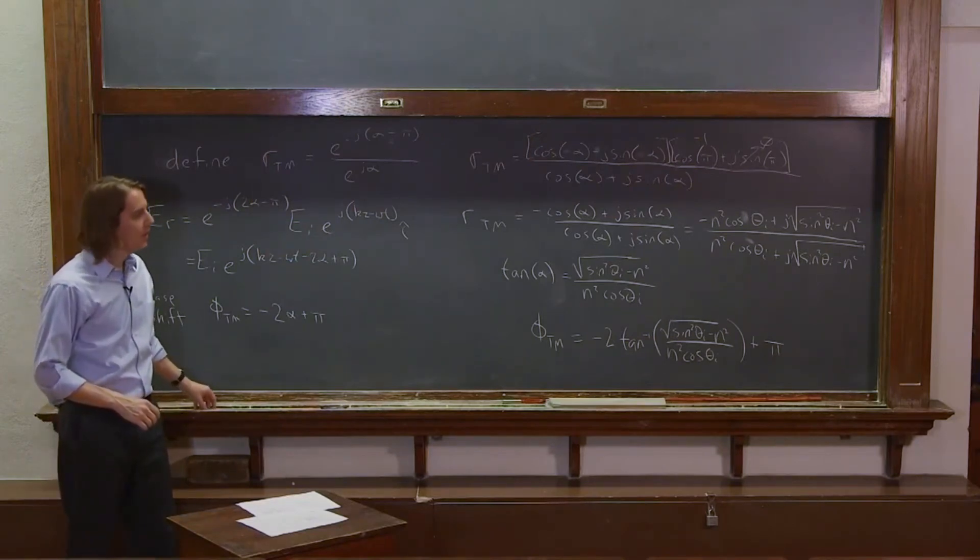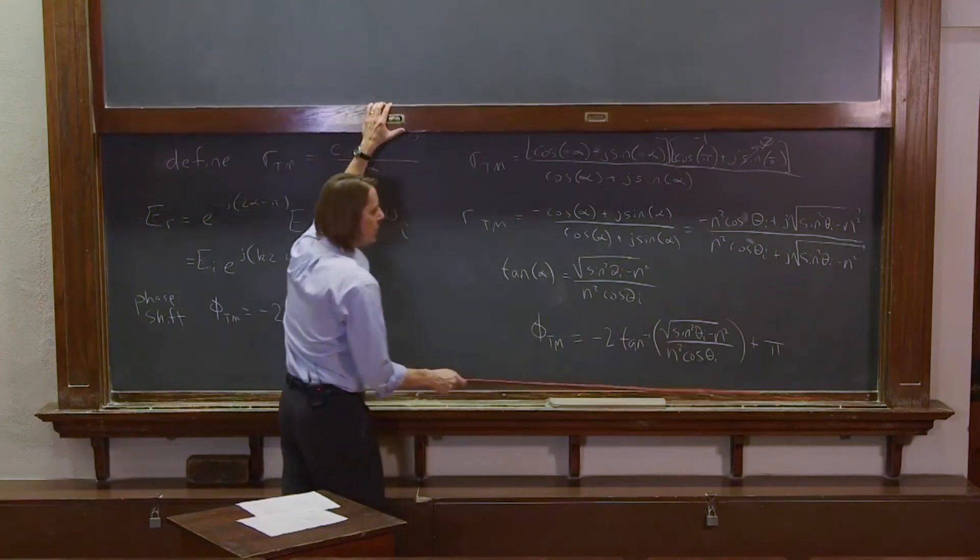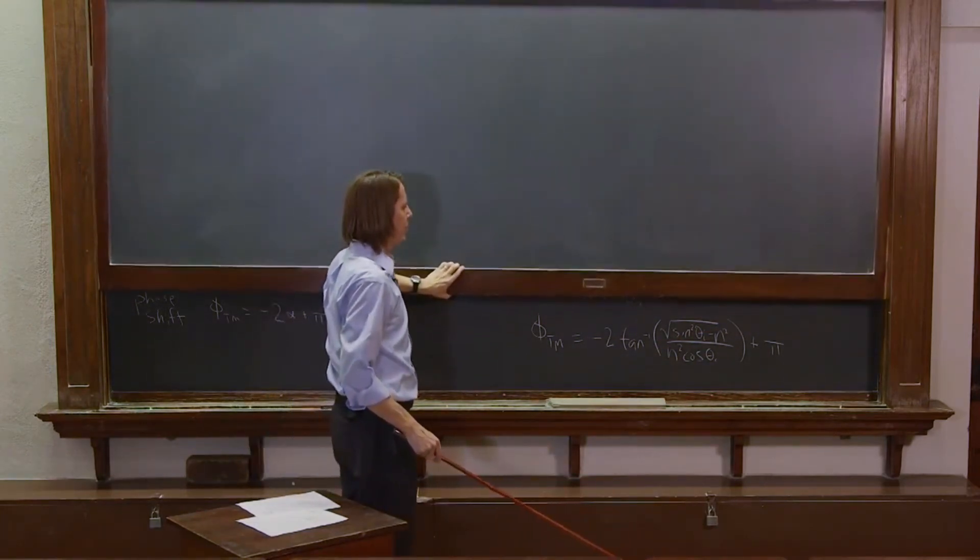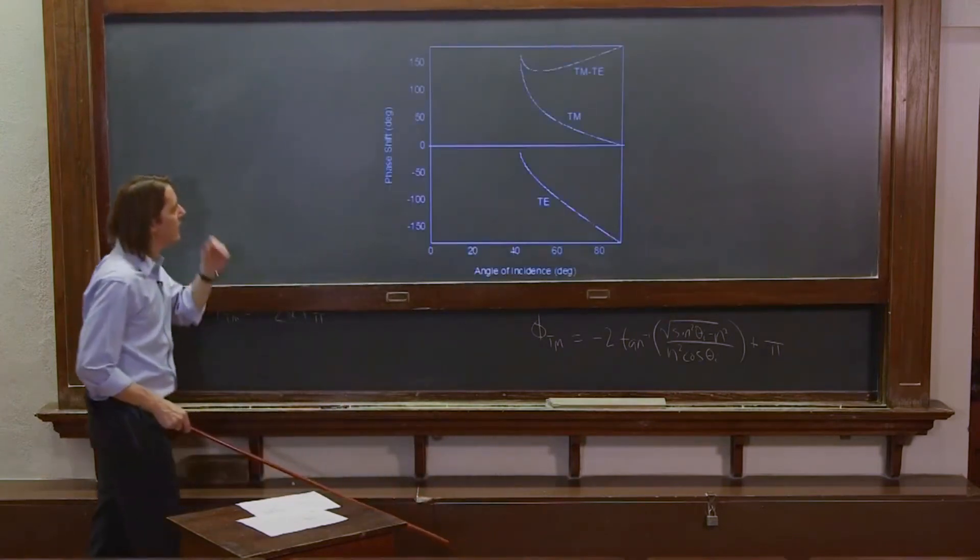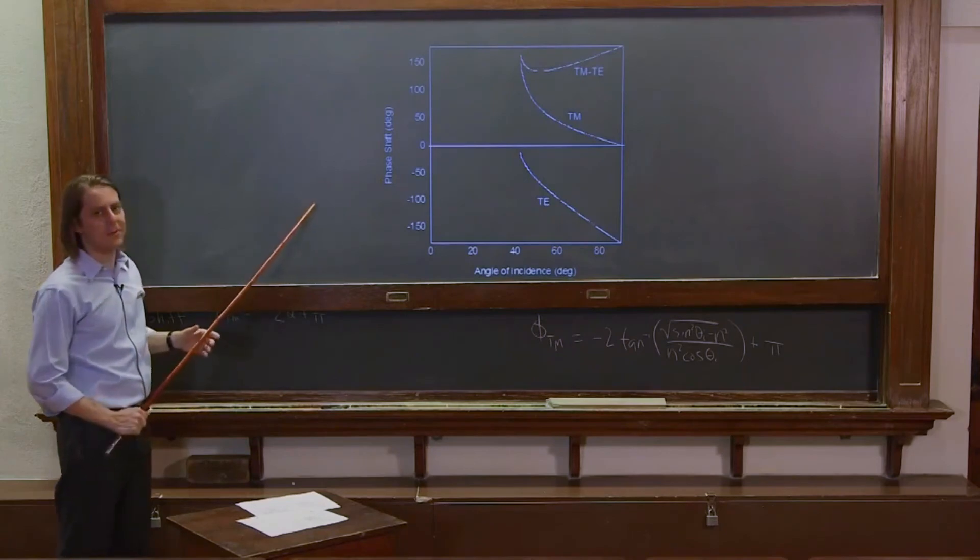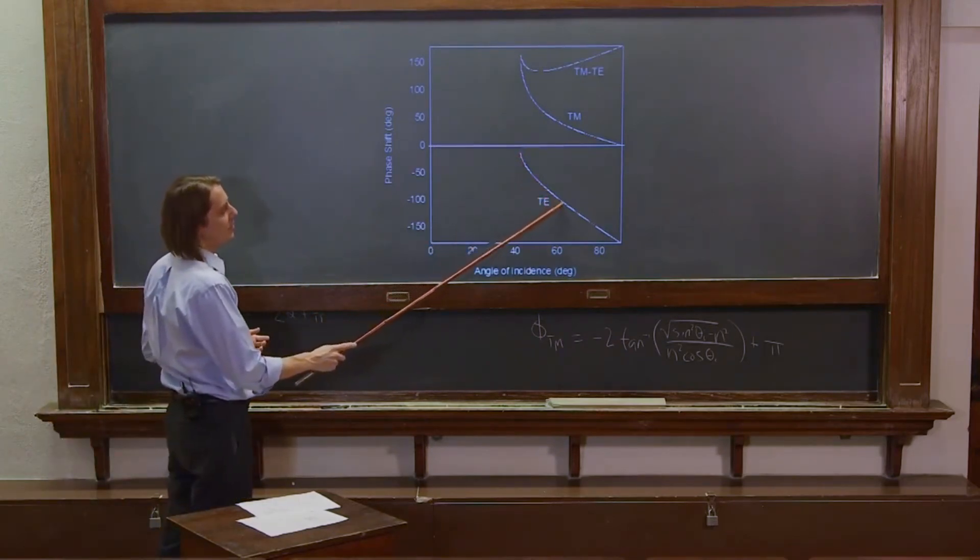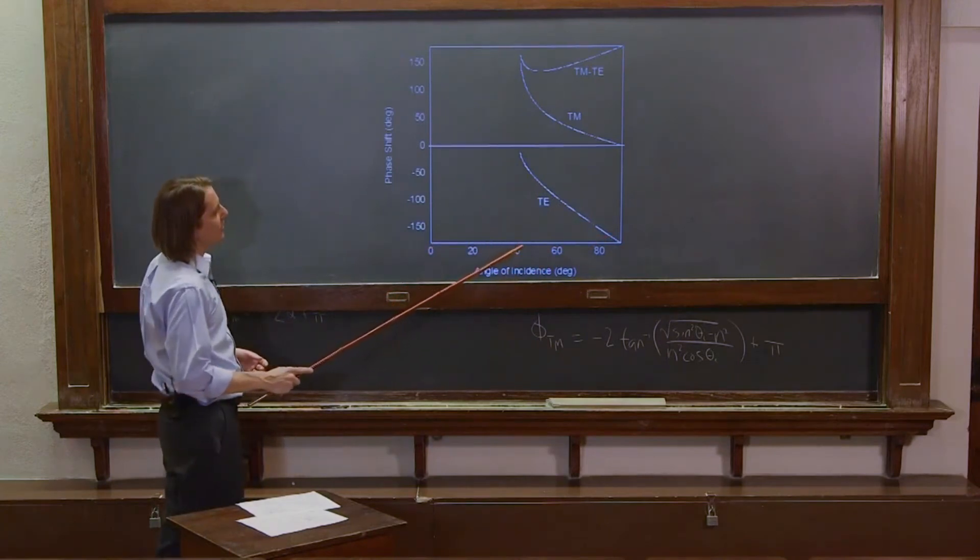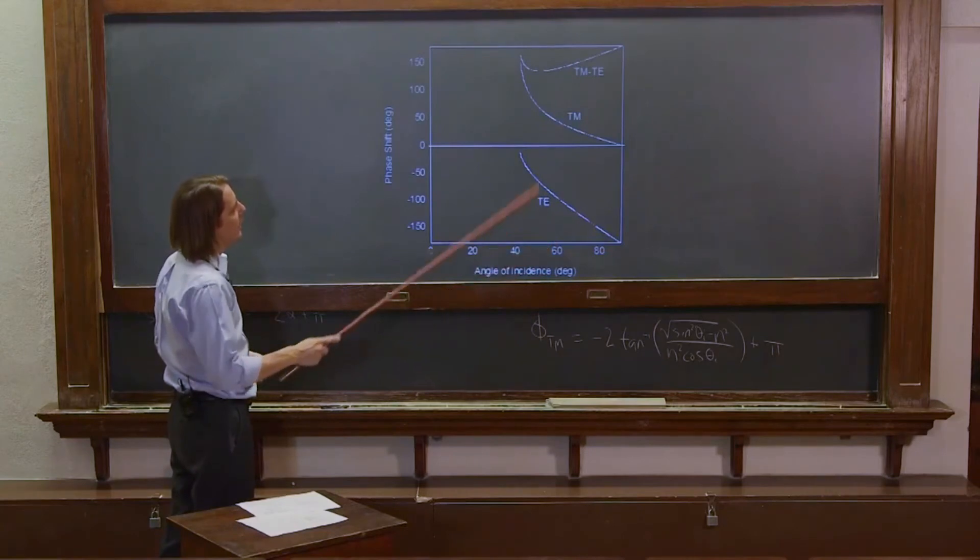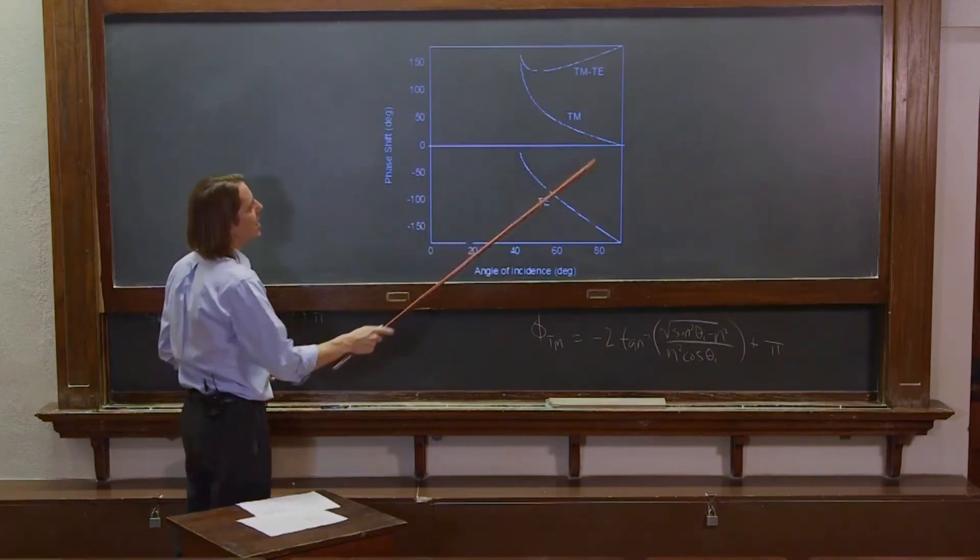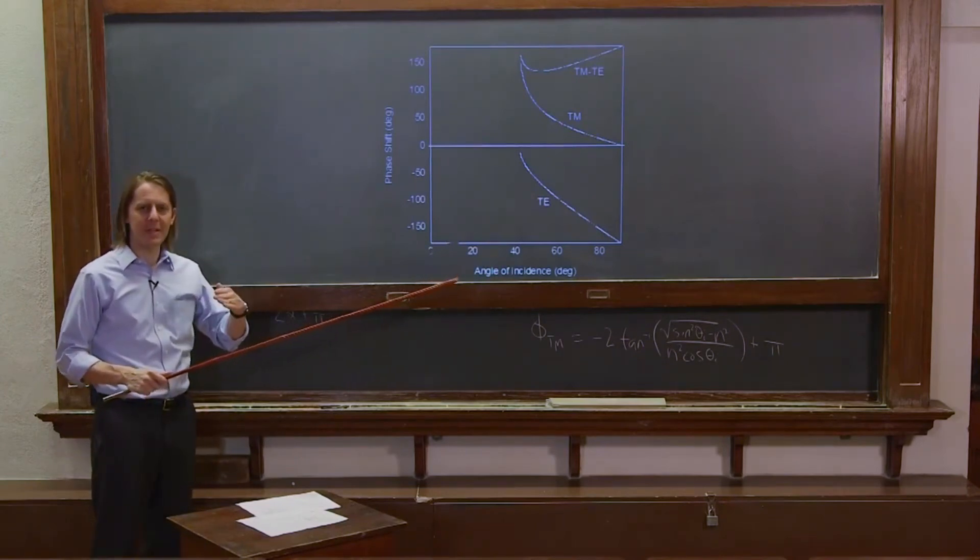And now we have them both. So now let's see what they look like. So I'm going to plot them for you real quick. Here they are. So here is the phase shift. This is just a direct plot of phi TE and phi TM. So here's phi TE. It actually comes out negative, the way we set things up. And we're only doing the large angles where you have total internal reflection. So from about 40 something on and phi TM comes out positive.